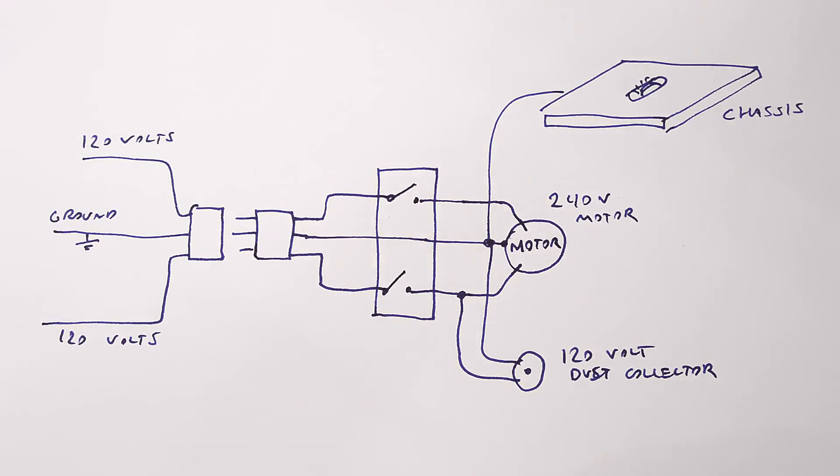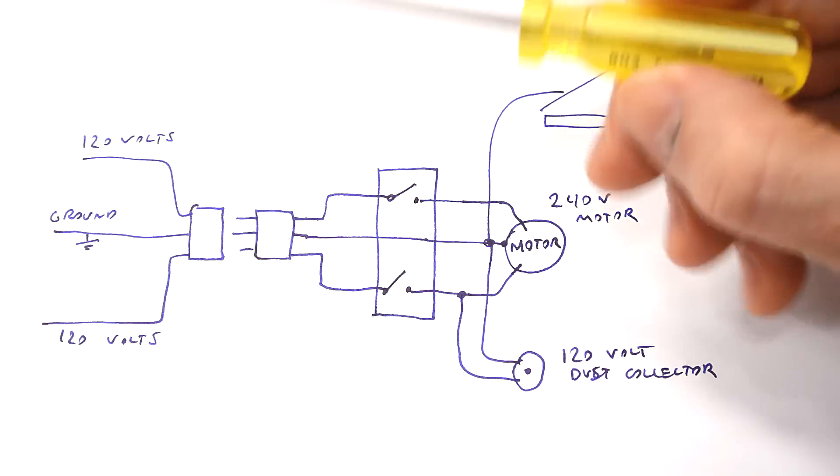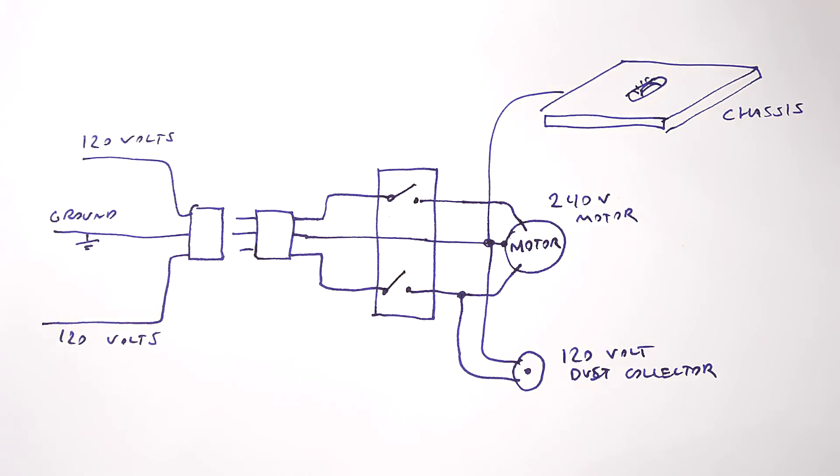The way our 240 volt circuits work is we have two 120 volt phases and they're always opposite to each other, so between those two we always have 240 volts.